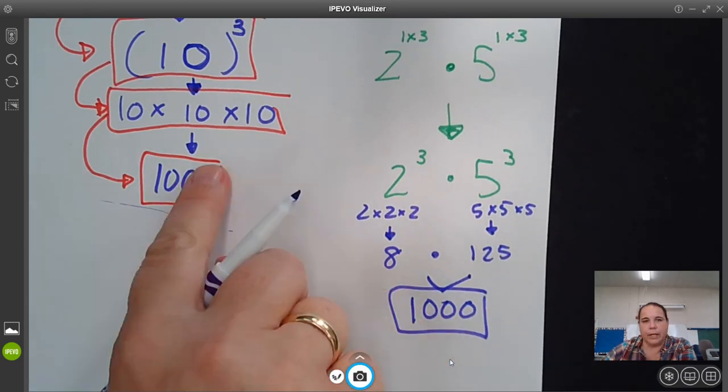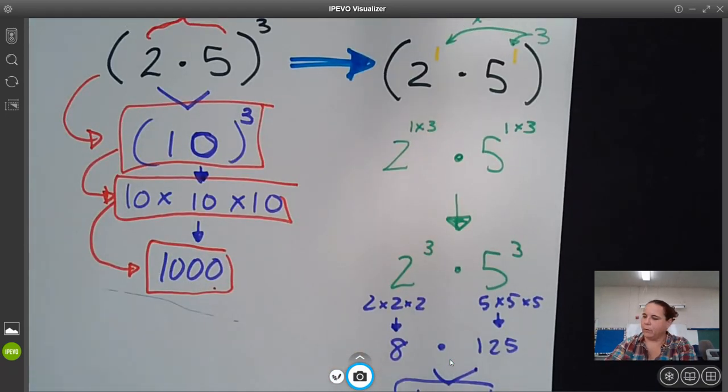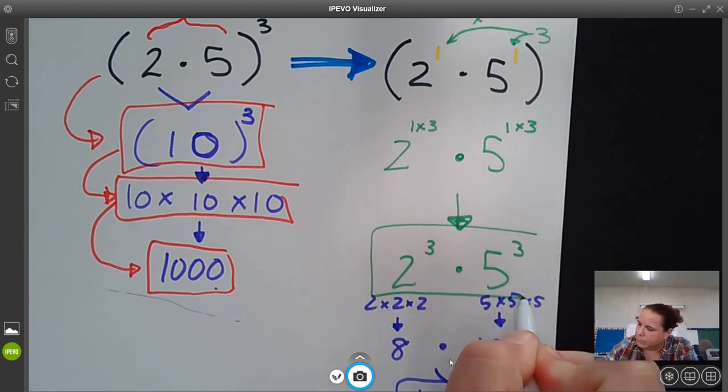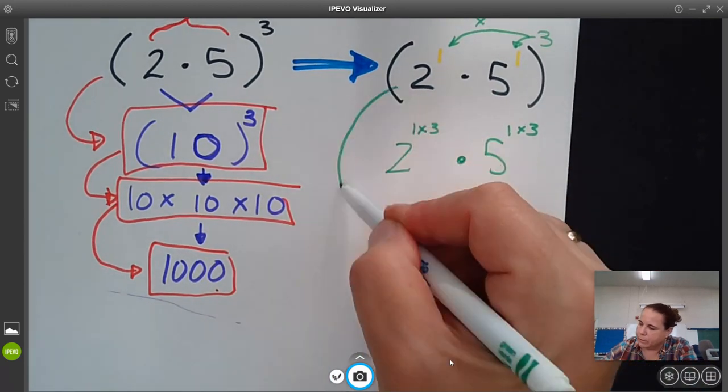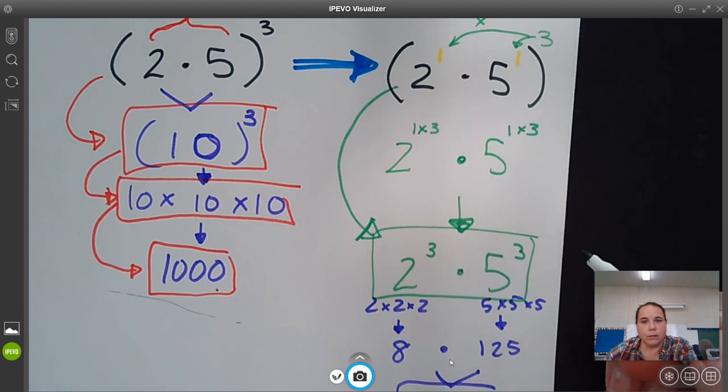So you get the same value, but what you have are different ways of showing that this is equivalent to this.